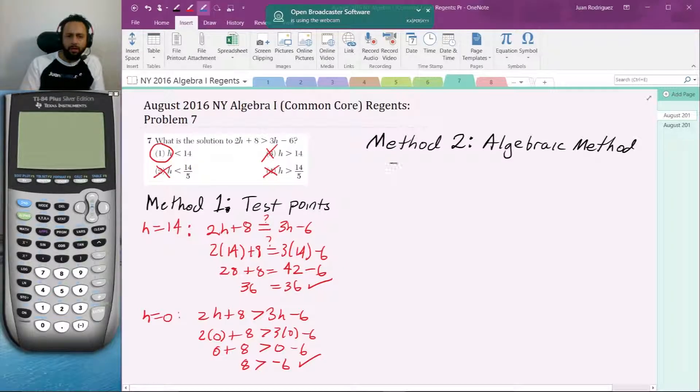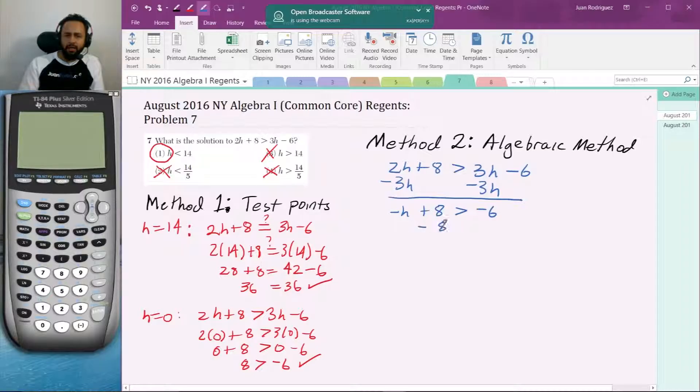You could use whatever method you want as long as you get the right answer, it's a multiple choice question. But 2H plus 8 is greater than 3H minus 6. I'm going to get H on the left side. Subtract 3H: I got negative H plus 8 is greater than negative 6. Subtract 8, and I got negative H is greater than negative 14.